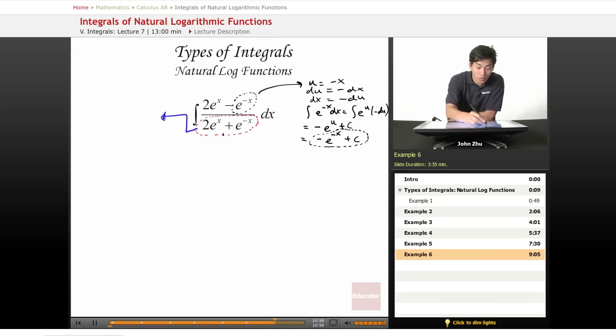So u in our case is 2 e to the x plus e to the negative x. Du equals 2 e to the x plus negative e to the negative x, which we see is right here. So then du equals 2 e to the x minus e to the negative x dx.